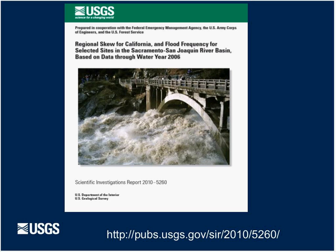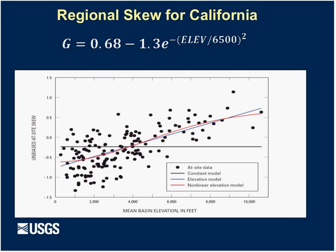California incorporated the Bayesian GLS approach, did a study, and published a report — a link is provided. Basically, instead of a map, the skew is expressed spatially as a function of elevation. We incorporated this skew in our estimates for this project.